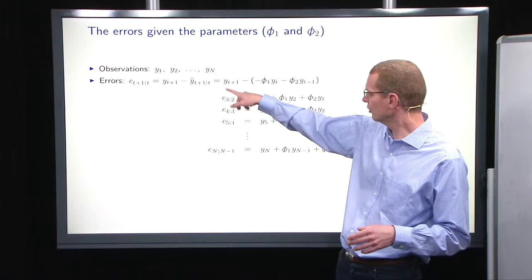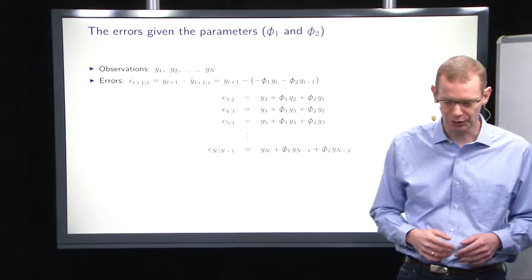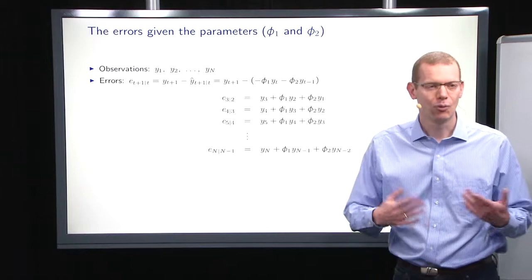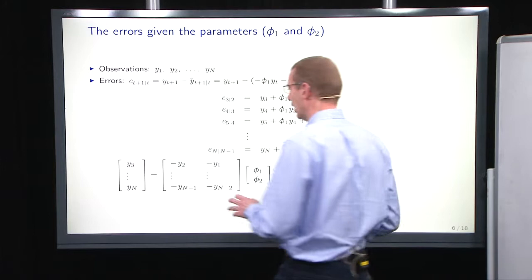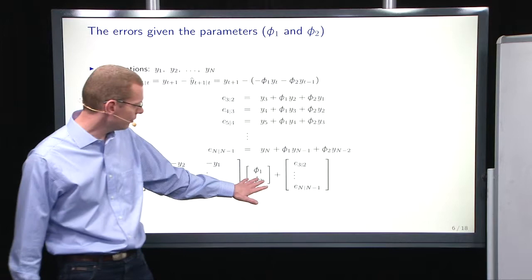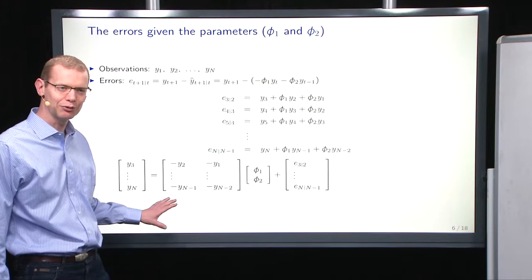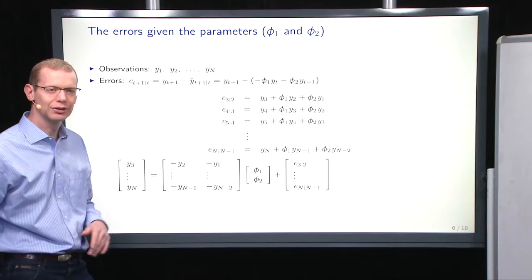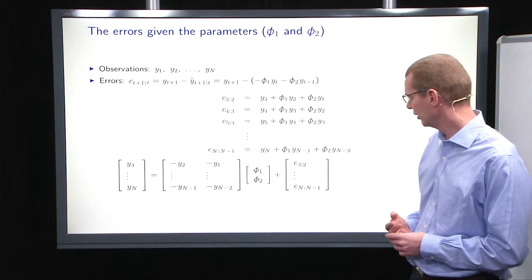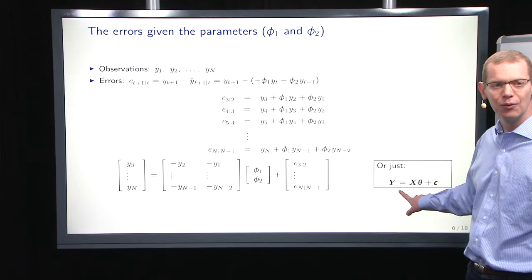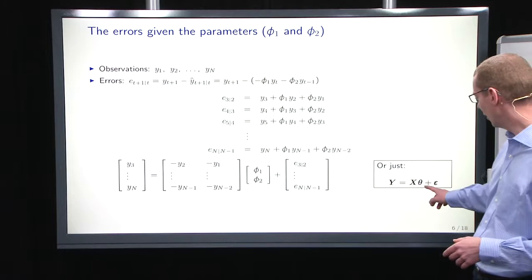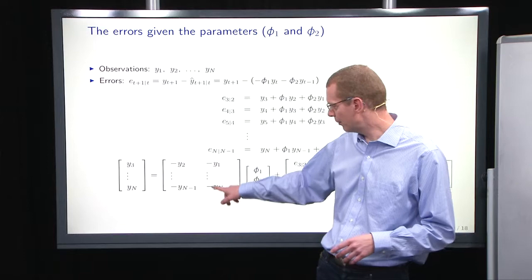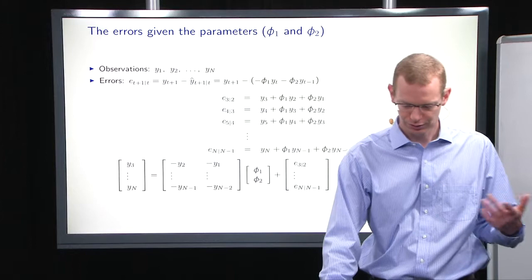We can do that for all time points starting from time 3, because for time 2 and time 1, we don't have observations 0 and minus 1. Why not do this in a smarter way? We can write it up in a matrix formulation. We have the observations, the parameters, and the epsilons, but the design matrix is a little bit different from what we've typically done, because now we have the past observations — the two previous observations in each row — as the two columns in the design matrix. I put a minus in front of all the observations to comply with the default definition in the book.